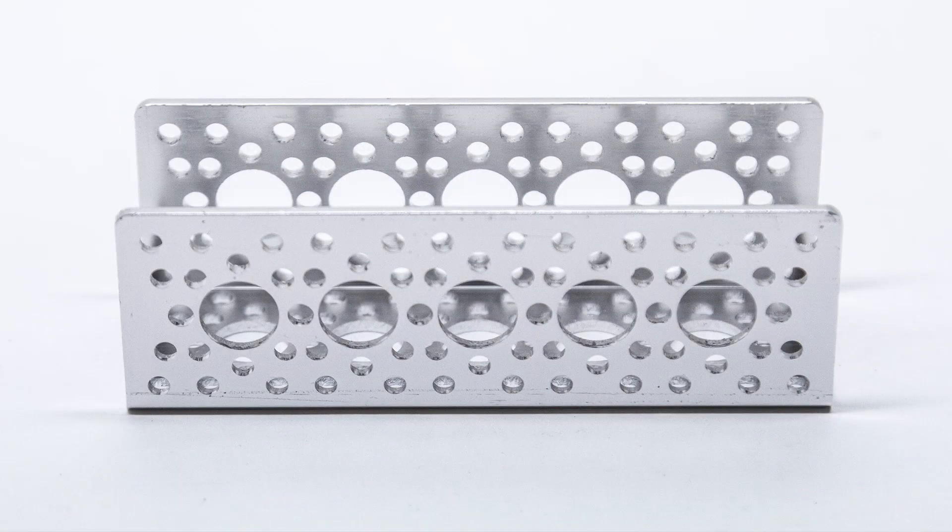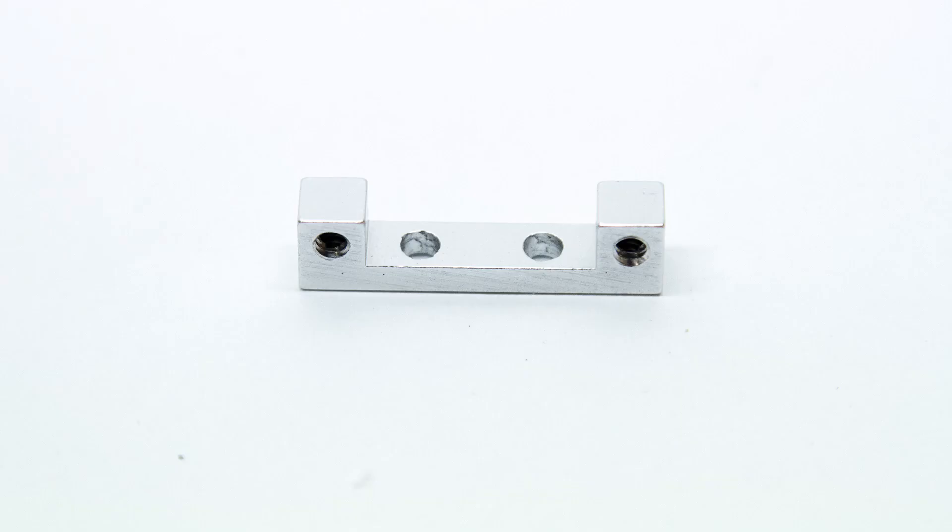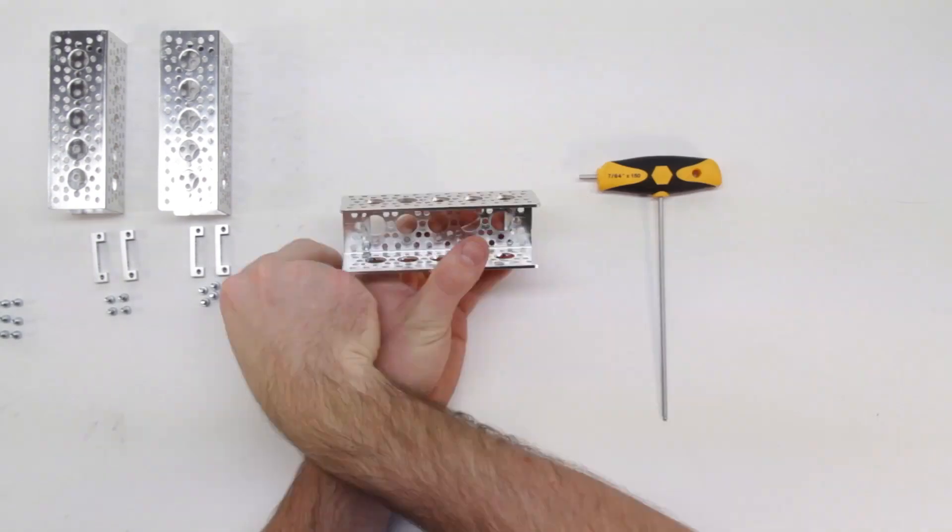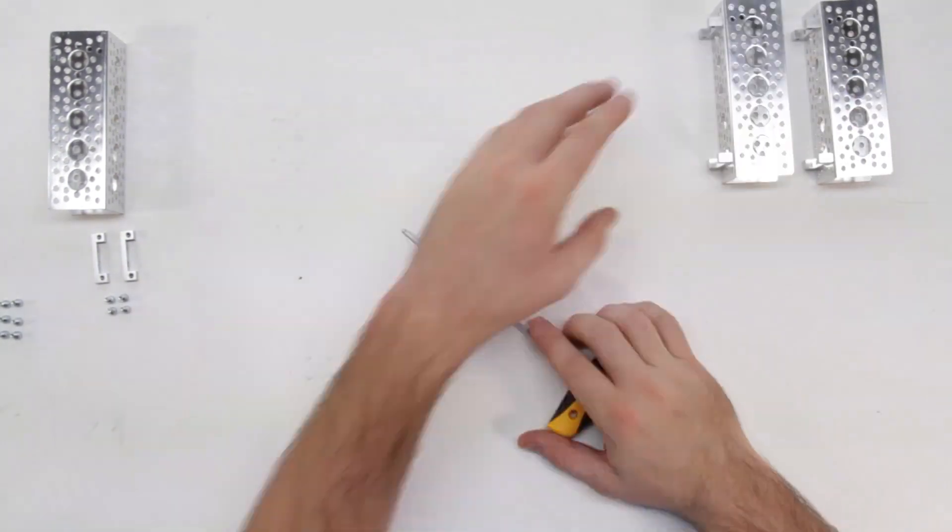For the second step you will need three pieces of 4.5 inch channel and six 90 degree dual side mounts. Attach the side mounts to the second set of holes on the outside of the channel. Do this for both the left and right sides of all three pieces of channel.